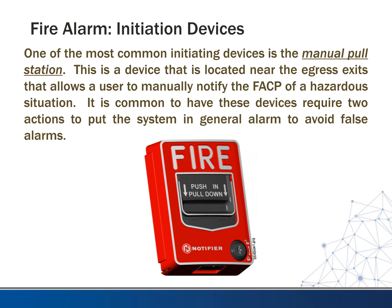One of the most common initiating devices is the manual pull station. This is a device located near egress exits that allows a user to manually notify the fire alarm control panel of a hazardous situation. We usually put these where you exit stairwells, near elevators, and at all egress exits. That way, if someone is fleeing the building, they can pull the alarm in case it hasn't already been signaled by another detector.